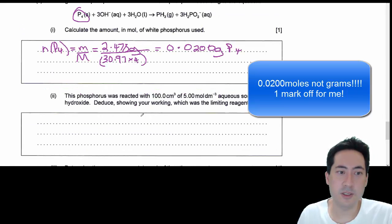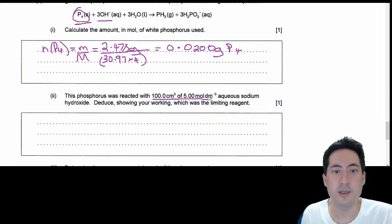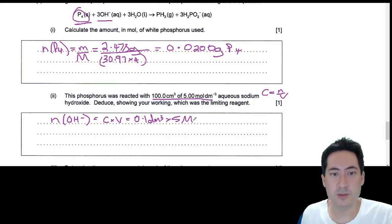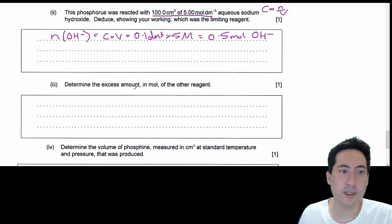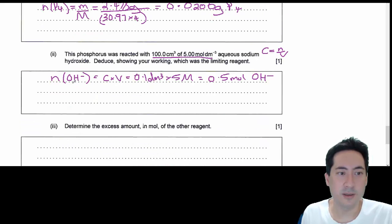The next question is, is this going to run out first or is this one going to run out first? Which one's the limiting reagent? So concentration equals number of moles of volume. The number of moles of OH minus is C times V, so that's 0.1 decimeters cubed times 5 moles per decimeters cubed. That's 0.5 moles of OH minus. Now the ratio is 1 to 3.